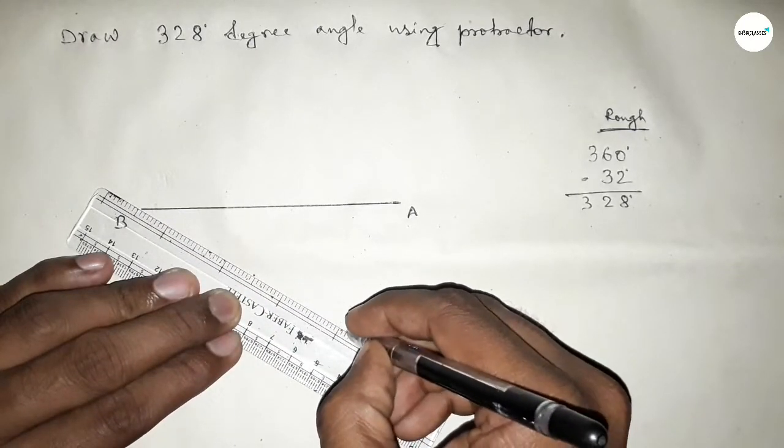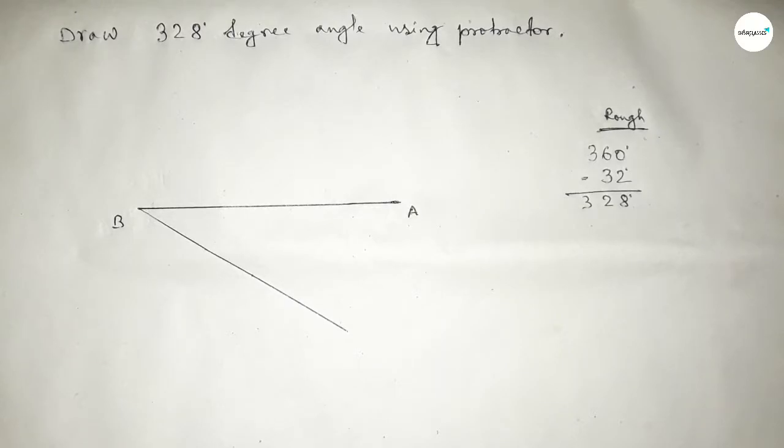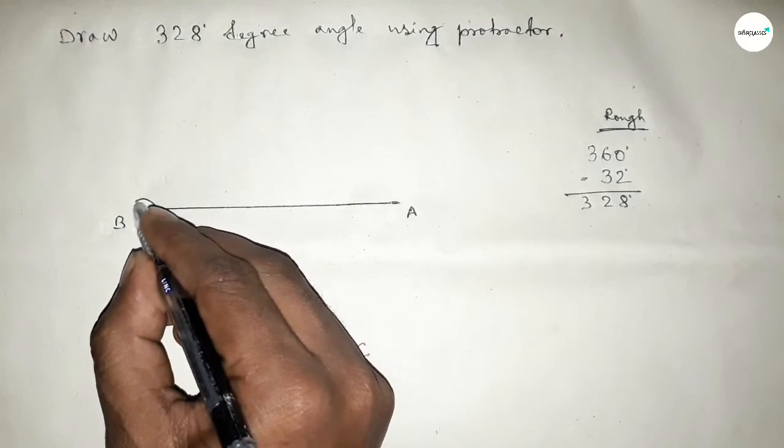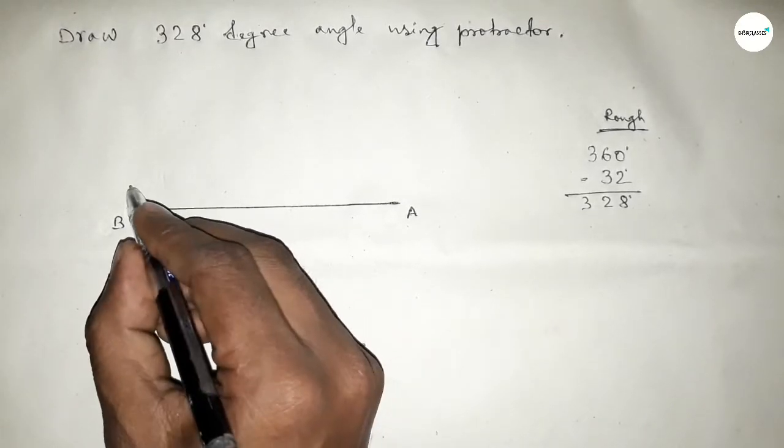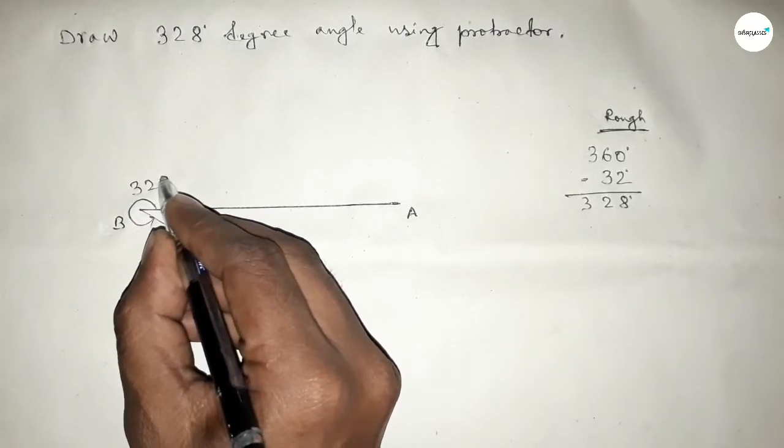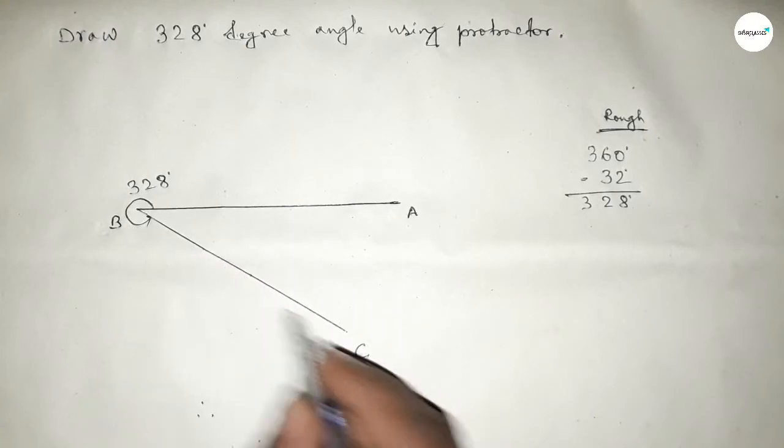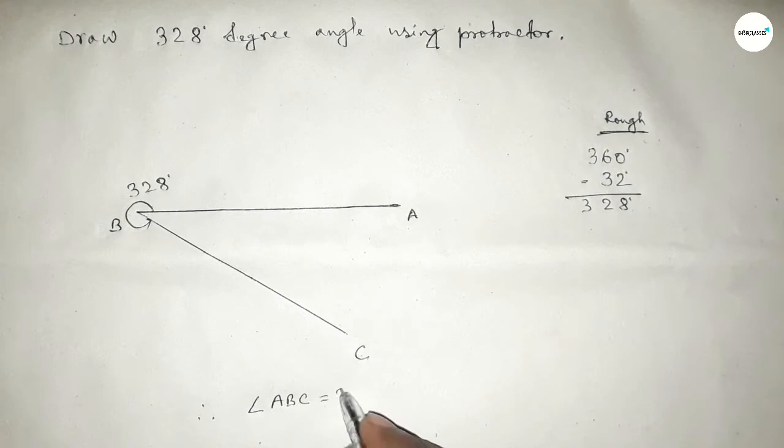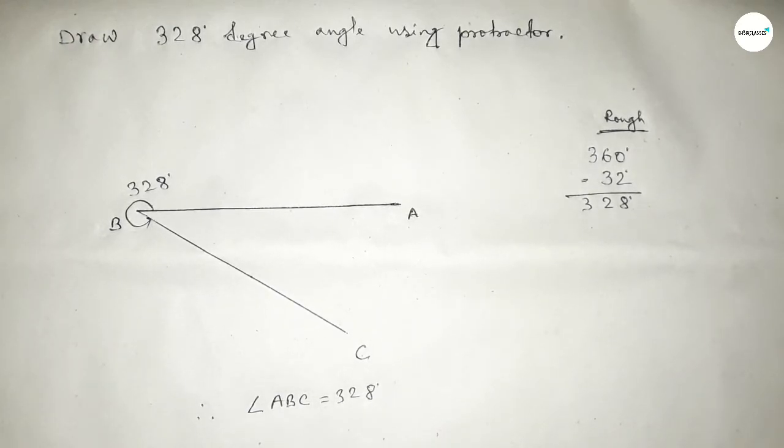So now joining this side and taking here point C. So angle ABC is 328 degree angle. Therefore, angle ABC equals 328 degree angle.